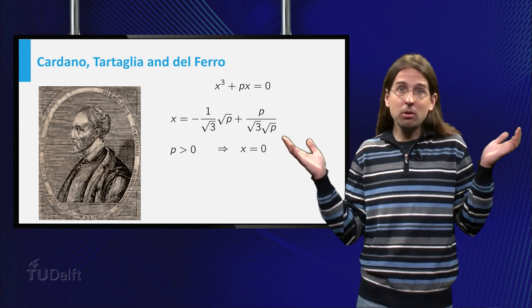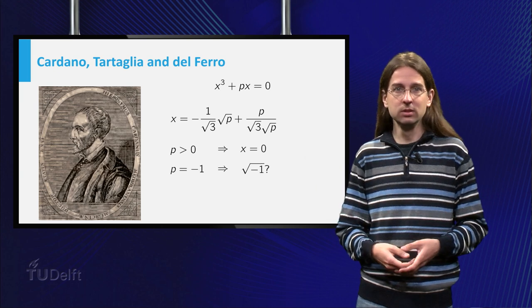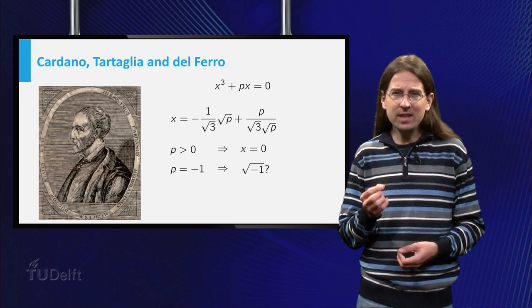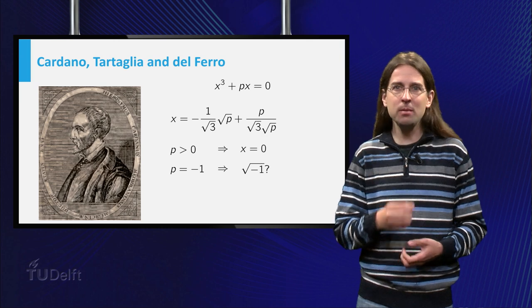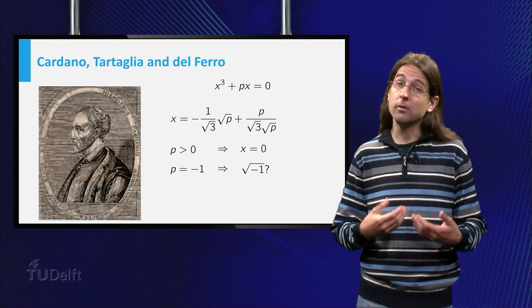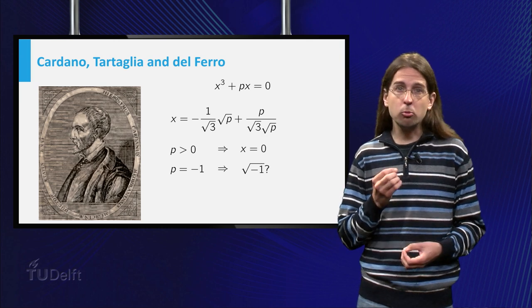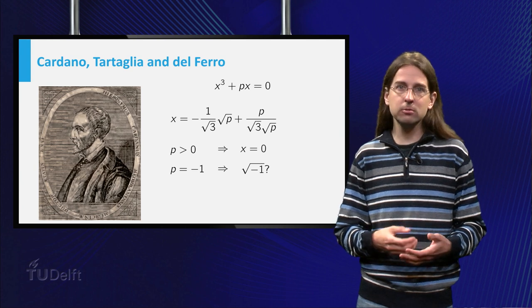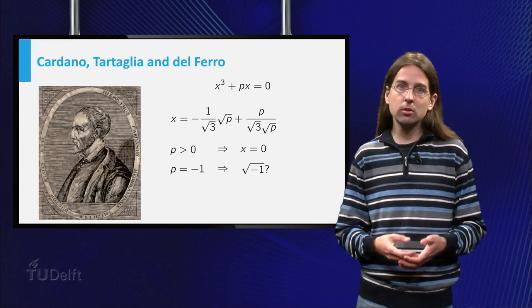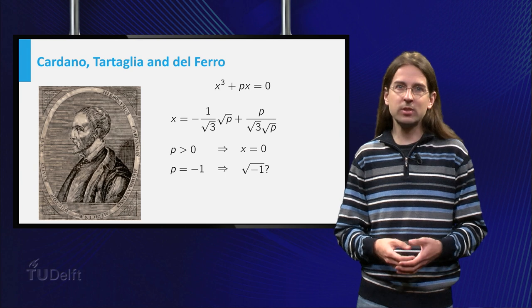But what happens to our formula if p equals minus one? We have to take the square root of a negative number. Fortunately, if we are willing to calculate with square roots of negative numbers, the solution x equals zero pops out as before.